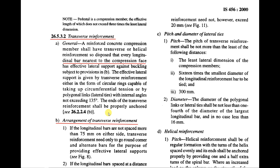In columns, we have two types of reinforcement: longitudinal reinforcement and transverse reinforcement. Longitudinal bars are vertical bars provided mainly to resist the load coming on the column. Transverse reinforcement is provided mainly to support and position the longitudinal bars, and also to help resist the shear force coming on the column. This is the main purpose of providing transverse reinforcement.